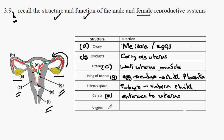Finally, Part F is the vagina, which is where the penis is introduced and sperm cells are deposited at the top of the vagina. They then make their way through the cervix. So the vagina collects the sperm cells and allows them to pass through the cervix into the uterus.